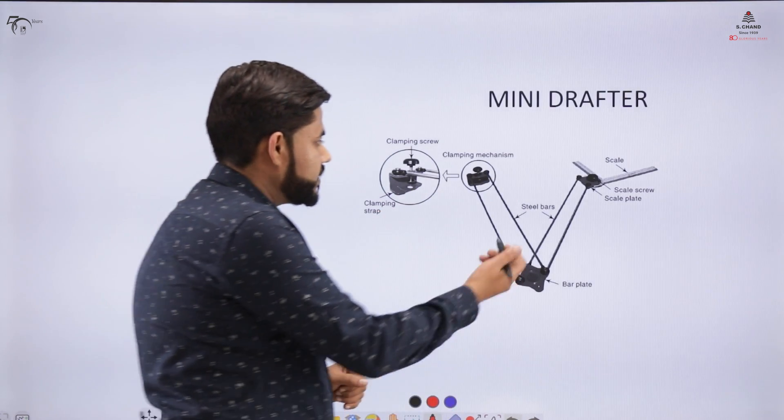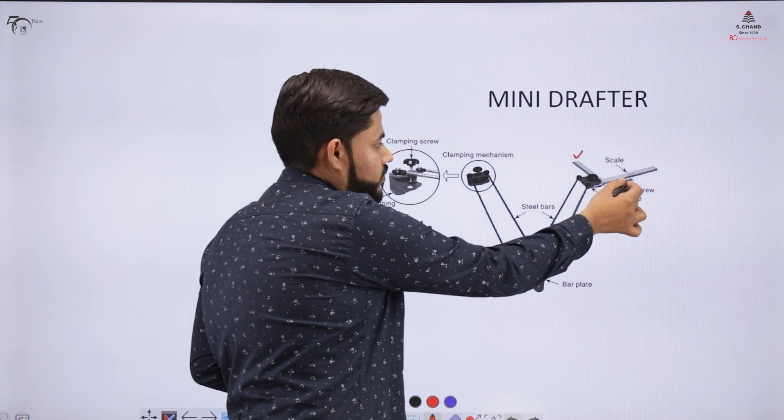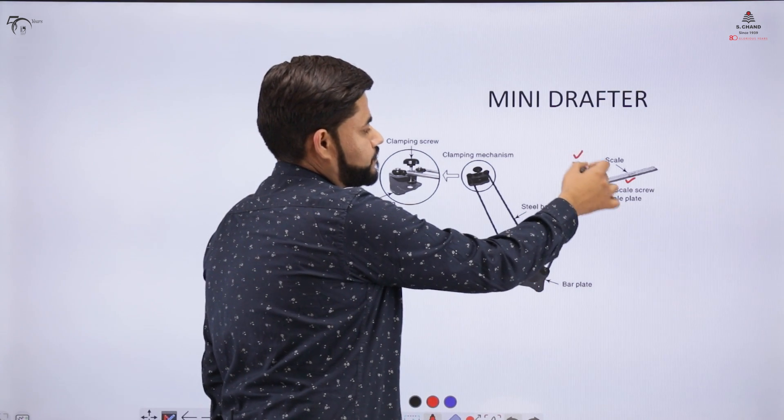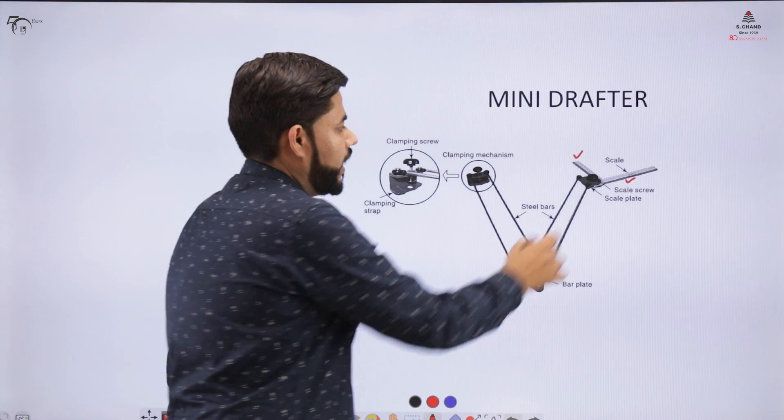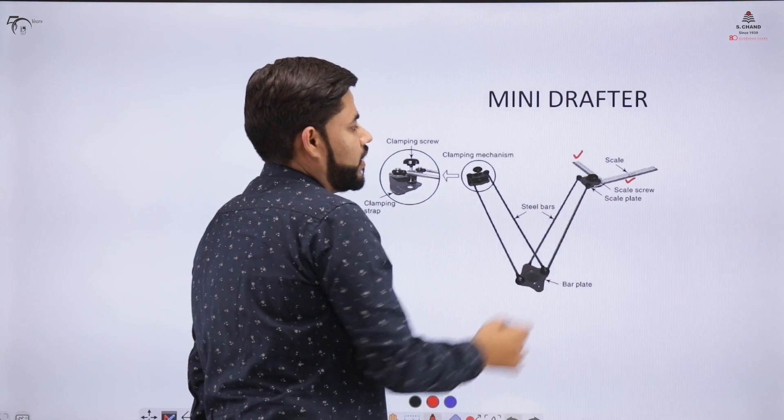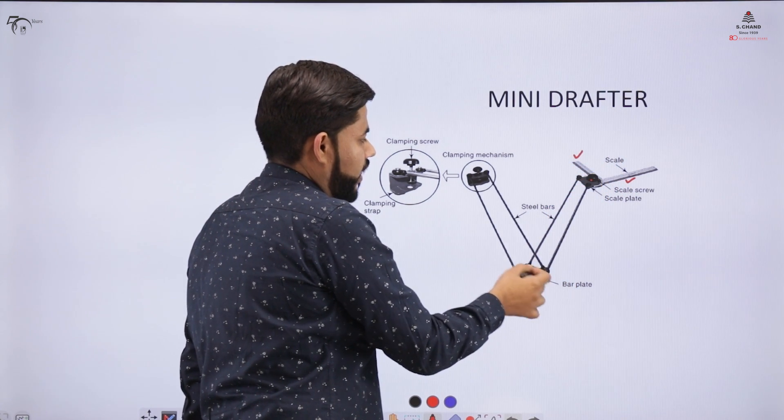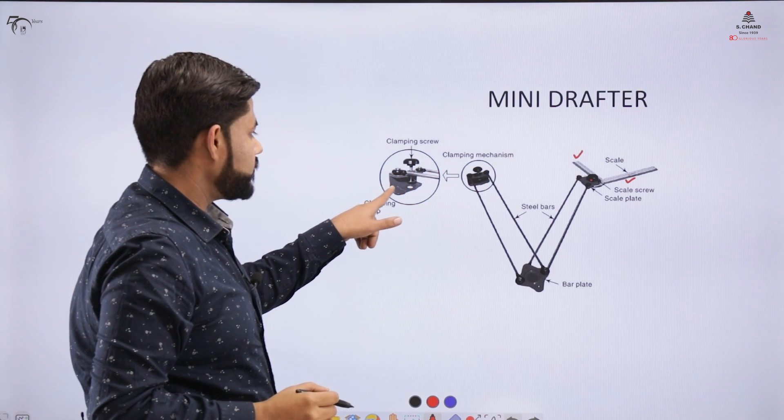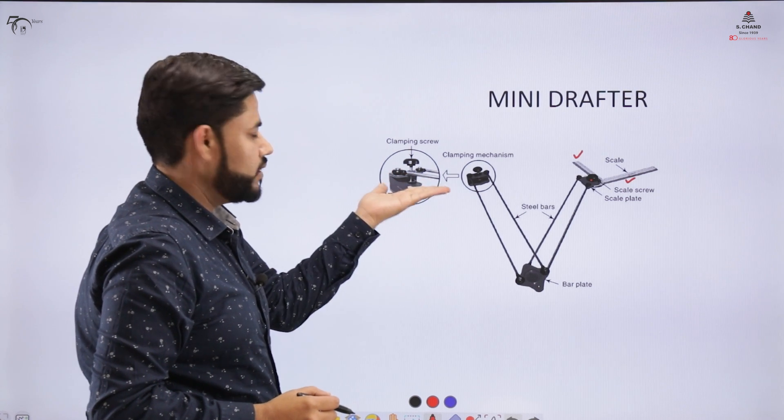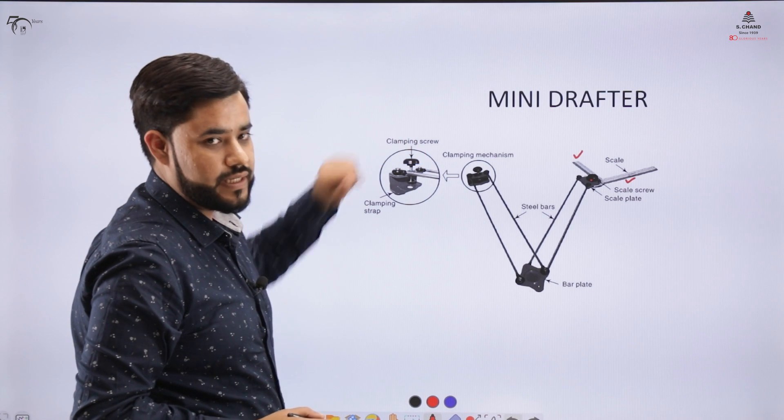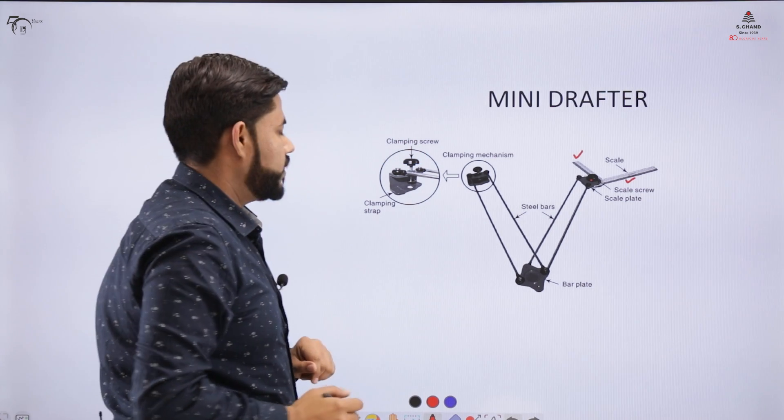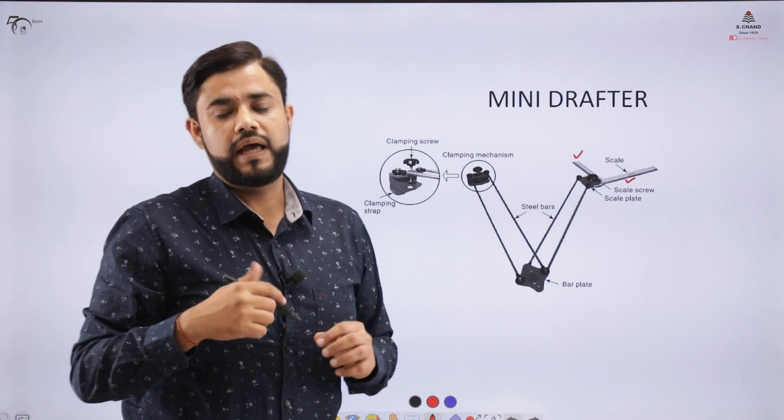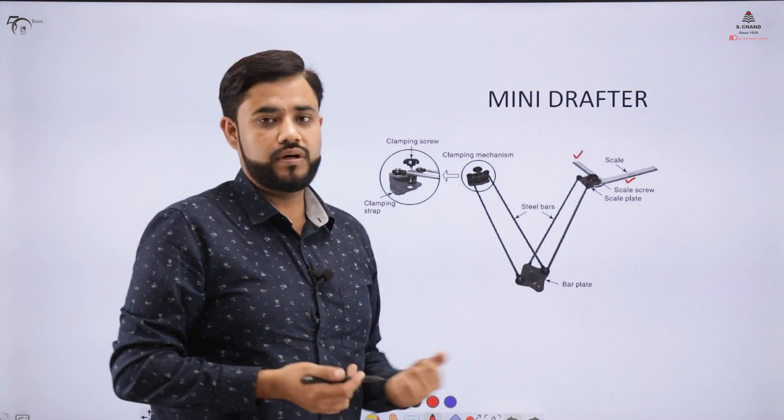Coming to the mini drafter: it has two scales, one horizontal and one vertical, connected to each other with the help of a protector. There is a knob which can lock the two scales, a bar plate, and a clamping mechanism. This clamping mechanism has a groove where the table is placed and this screw is tightened with the clamping nut. It is a multipurpose tool - if you want to draw a straight line, vertical line, or a line inclined at an angle, you can do that at one go.